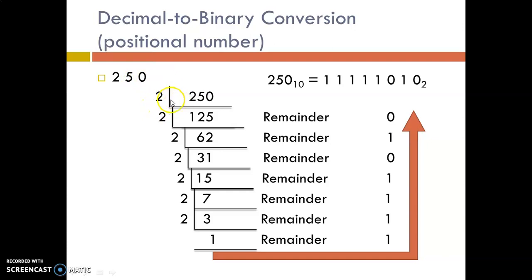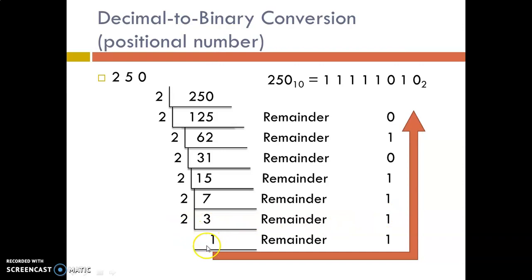Dividing by 2: quotient is 125, remainder is 0. Again dividing by 2: quotient is 62, remainder is 1. Again: quotient is 31, remainder is 0. Again: quotient is 15, remainder is 1. Dividing by 2: quotient is 7, remainder is 1. Again: quotient is 3, remainder is 1. Again: quotient is 1, remainder is 1. We cannot proceed further, so we stop here. Moving in the reverse order, the binary equivalent of this decimal number is 1 1 1 1 1 0 1 0.